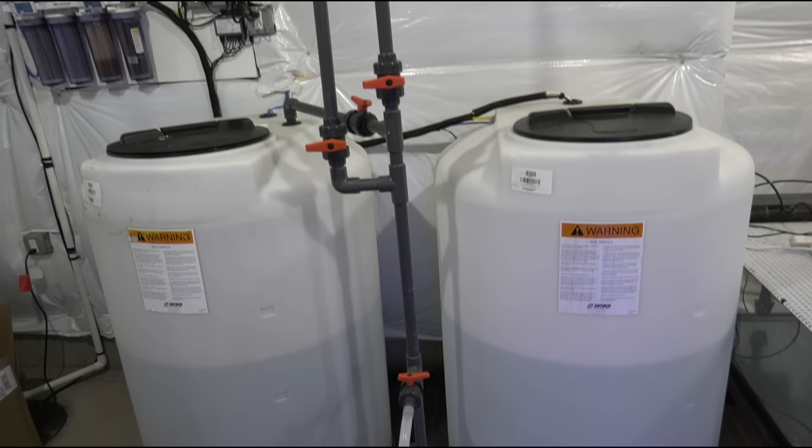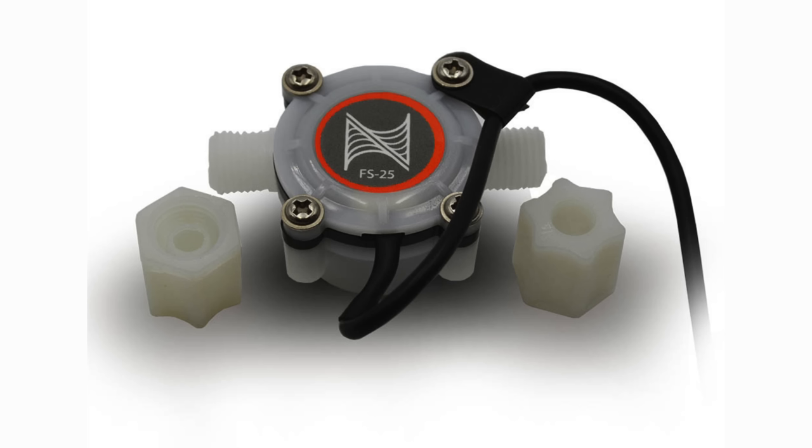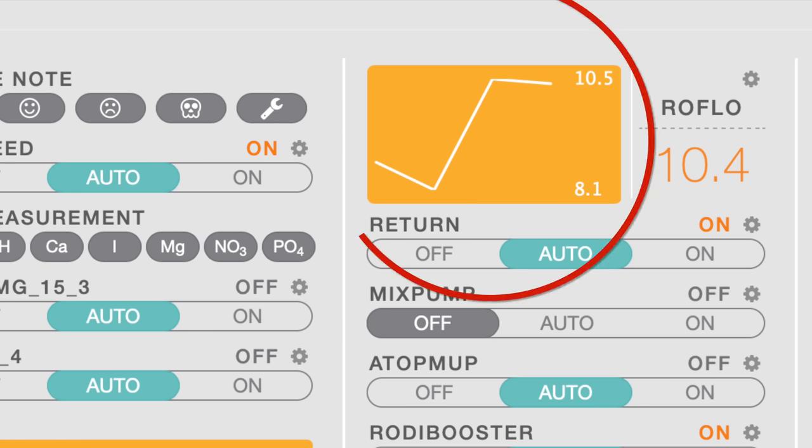One item I'm considering adding to the system is a quarter inch flow sensor for the input of the RODI unit. Not only will the sensor confirm that the RODI unit is making water, it can also give the owner an alert that he needs to change the RODI filters. See, as the filters get dirty, water production slows down and the RODI unit draws less water. Therefore, a lower than normal flow rate of water going into the RODI unit lets me know that it's time for a filter change.